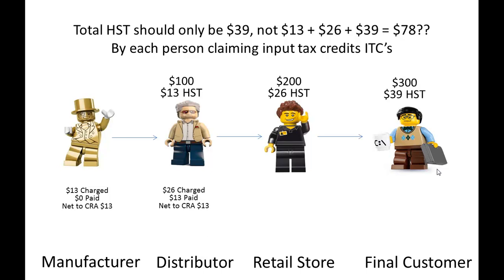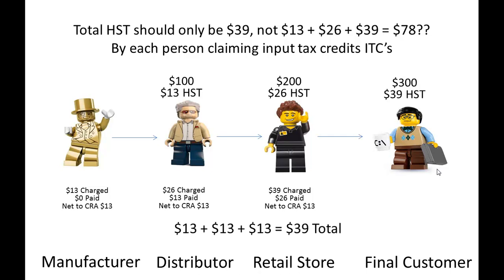The distributor charged $26 when he sold to the retail store, but he paid $13 to the manufacturer when he first bought it. So $26 less $13 is $13. Finally, the retail store charged the final customer $39. He paid $26 when he bought it from the distributor. So he's going to send in $13 net to the CRA.